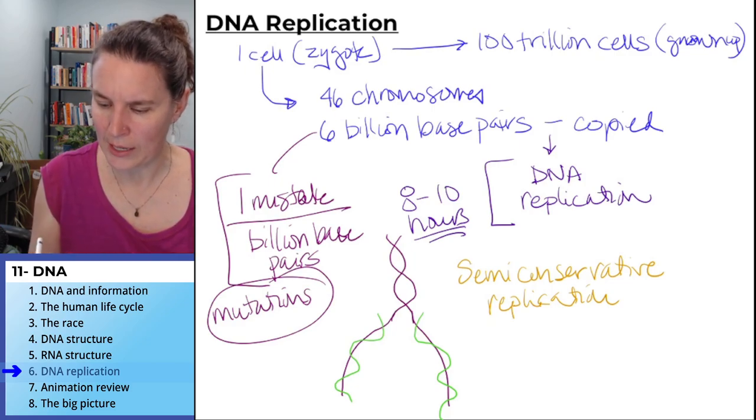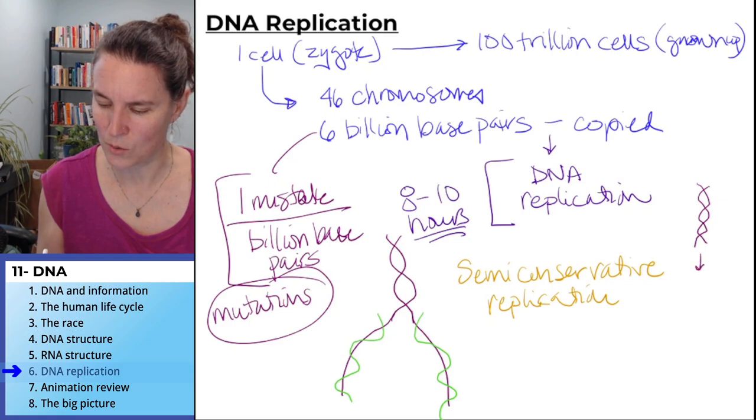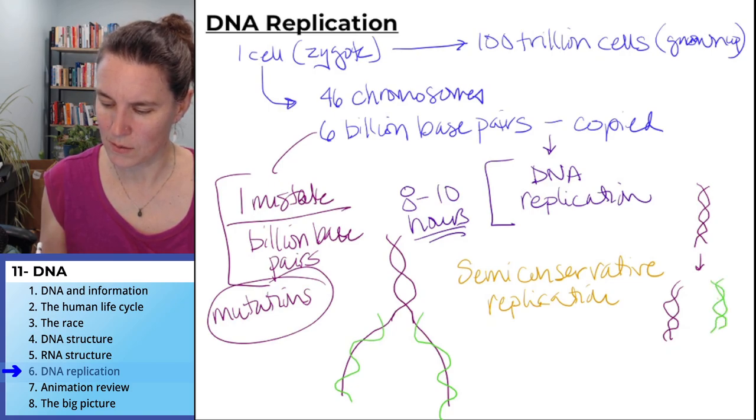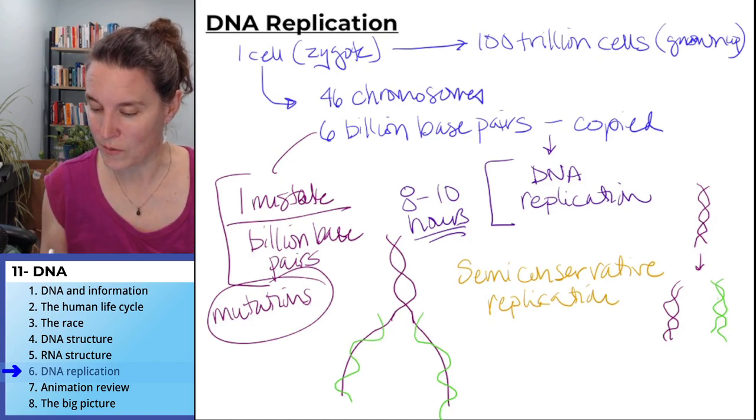The alternative would be like conservative DNA would look like this, where somehow we went from that to this. Okay, sorry for my DNA drawings, but you get the idea that this would be conservative.